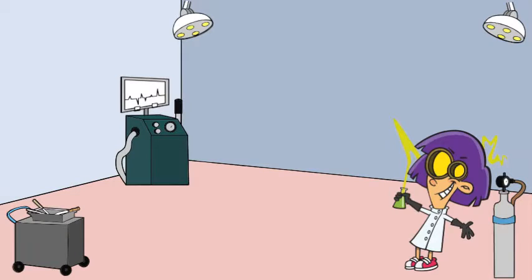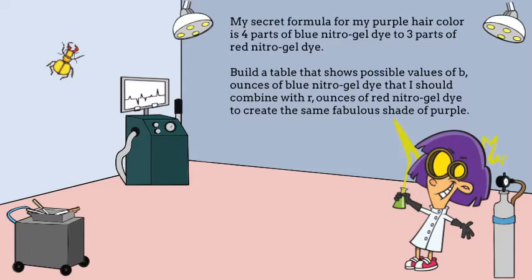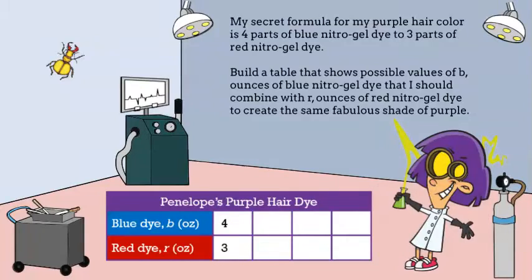Welcome to my math lab. I am Penelope, and the guy on the wall is my African tiger beetle friend Harold. You caught me in the middle of mixing up some more dye for my beautiful purple hair. My secret formula for my purple hair color is four parts of blue nitro gel dye to three parts of red nitro gel dye. Build a table that shows possible values of B ounces of blue nitro gel dye that I should combine with R ounces of red nitro gel dye to create the same fabulous shade of purple.